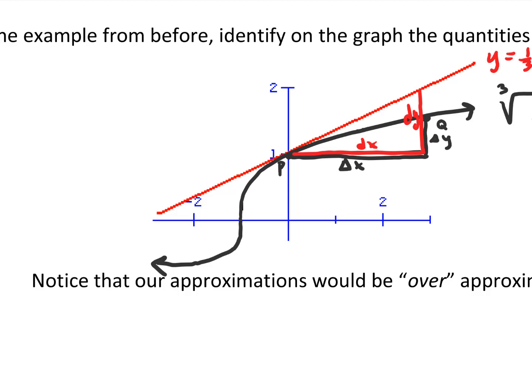We can see: delta x is the change in x on the function, and dx is the change in x on the tangent line. Delta y is the change of y values on the function, and dy is the change in y values on the tangent line. Using the tangent line here gives over-approximations because the tangent line is above the function.